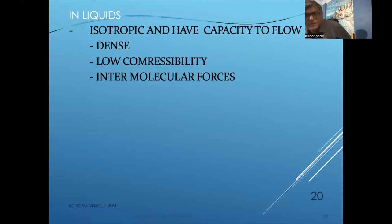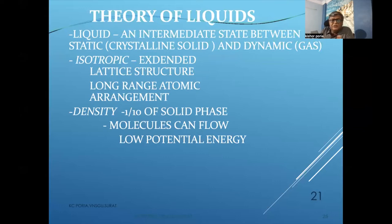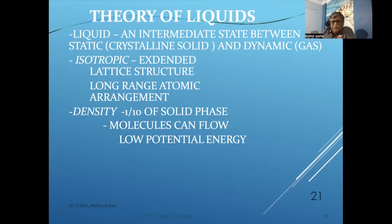Liquid is isotropic, has the capacity to flow, is dense, and has low compressibility. Intermolecular forces are present. To understand liquids, Eyring's theory was developed, which describes an intermediate state between the static crystalline phase and the dynamic gas phase. Liquid is the intermediate state between solid and gas — an isotropic material with extended lattice structure. Long range atomic arrangement means the density of liquid is about one tenth of that of the solid phase. Molecules can flow and have low potential energy.